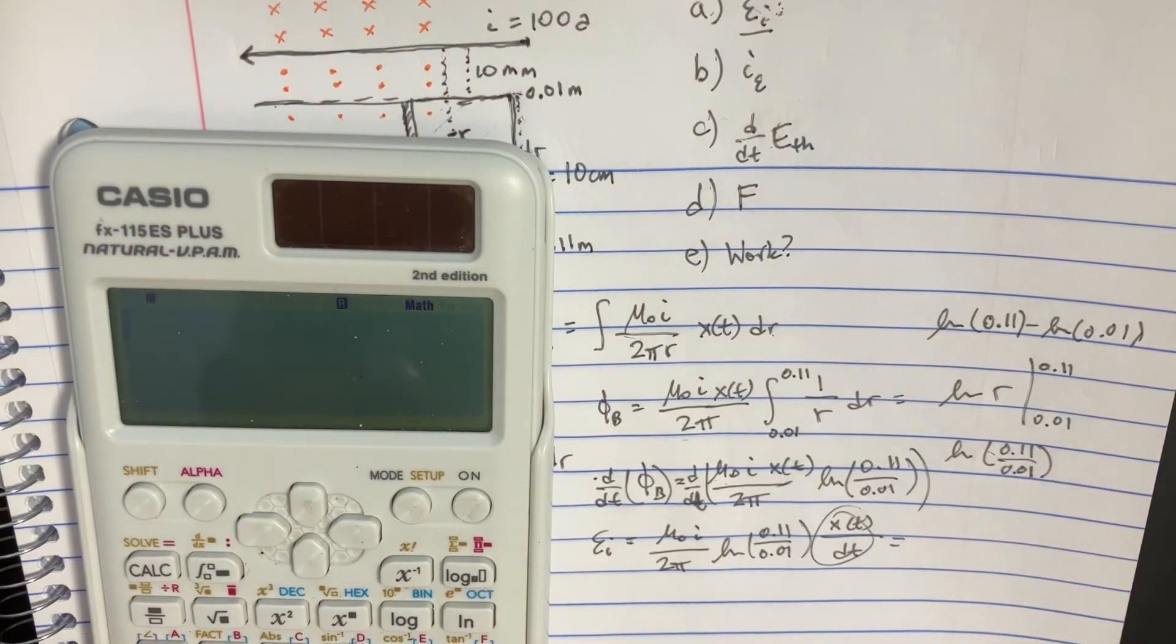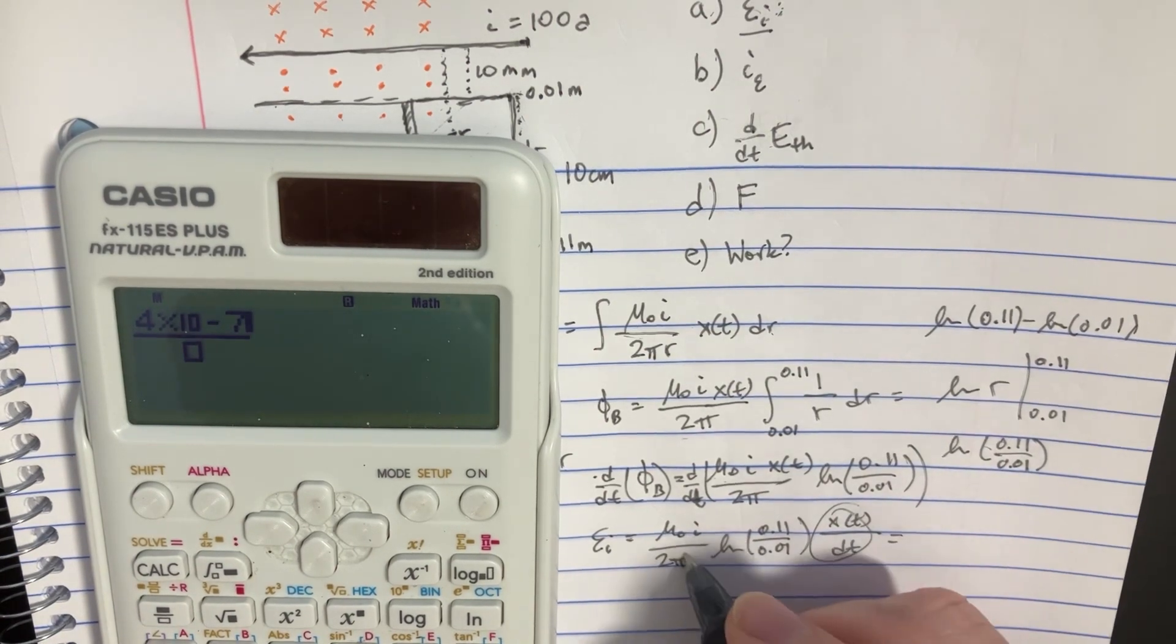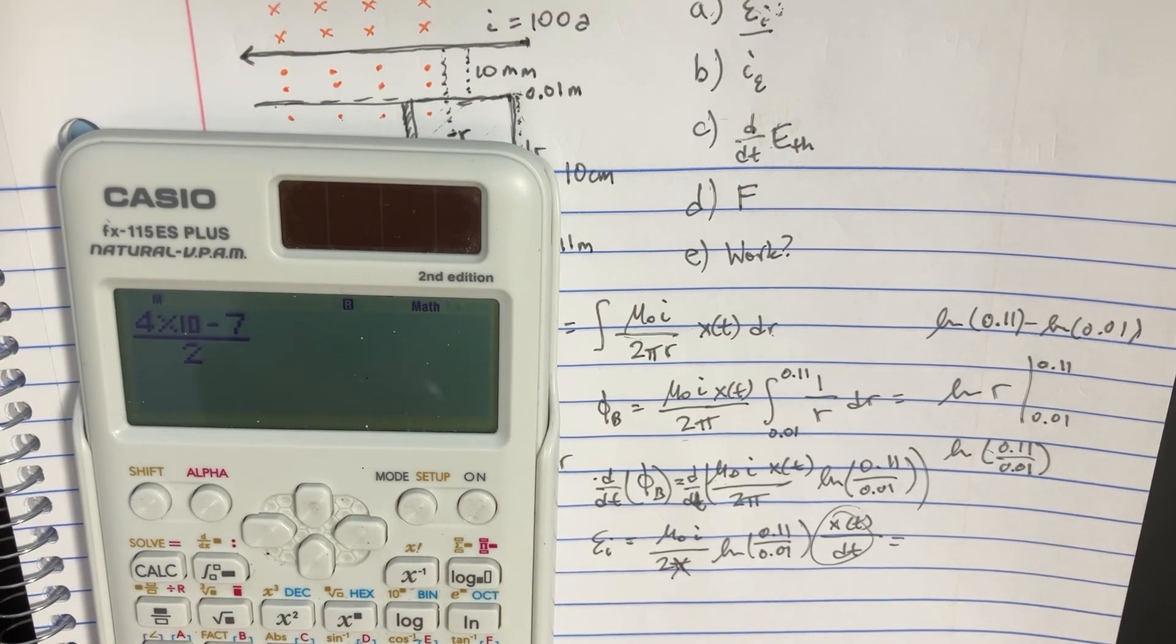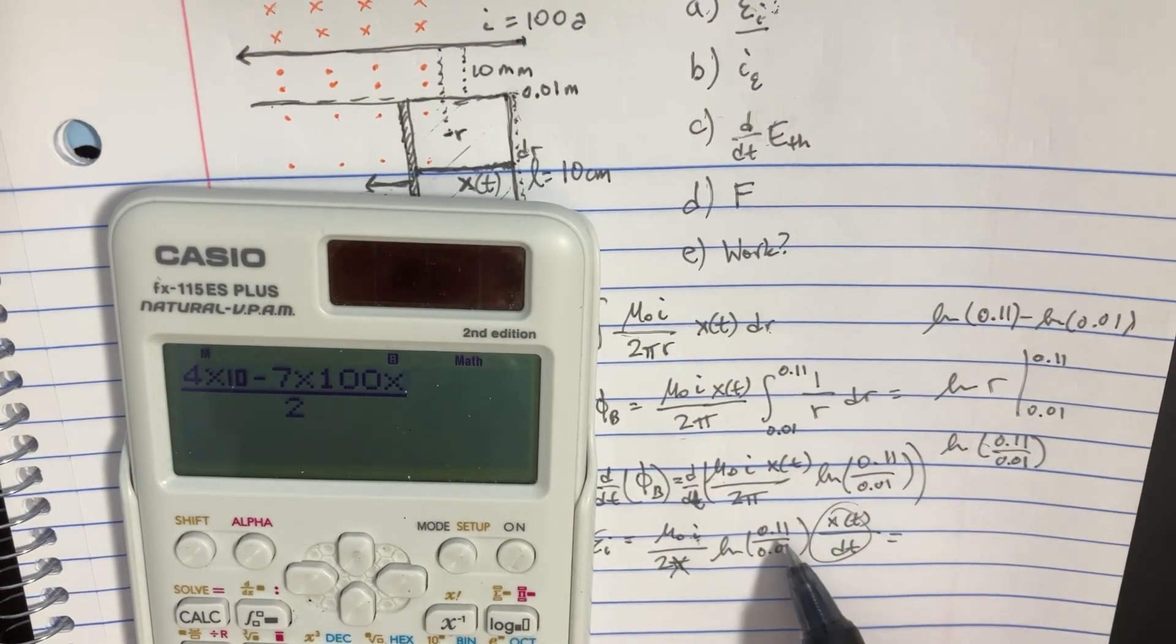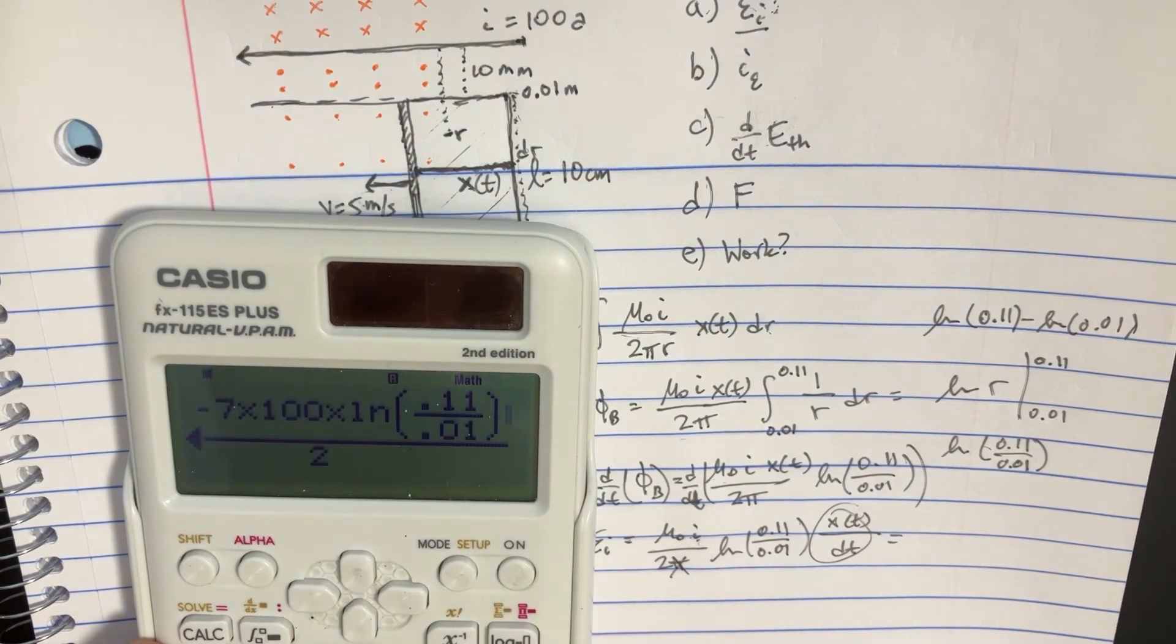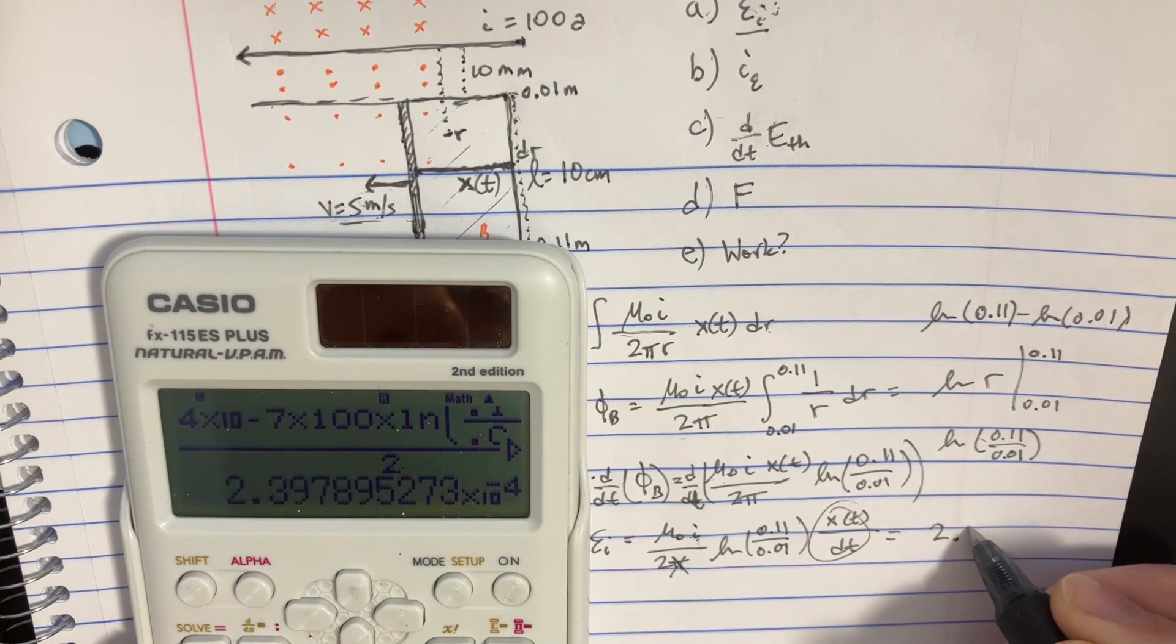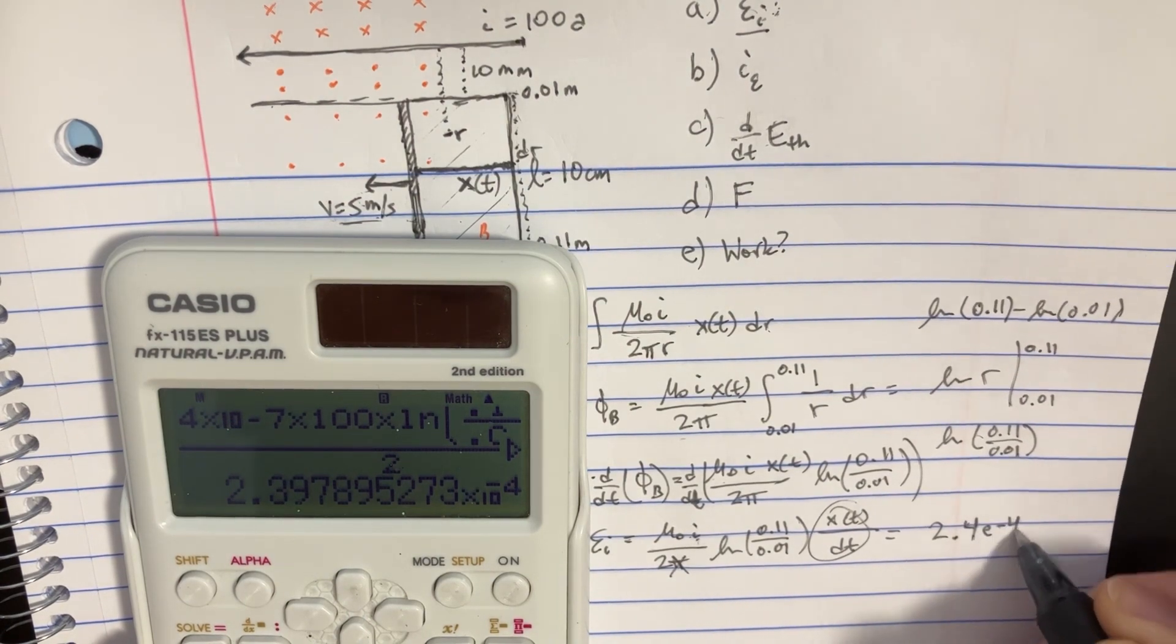So let's just go ahead and plug in mu naught is going to be 4e to the negative 7. We've got a pi on the bottom there. We'll just get rid of that. So we essentially just have the 2 on the bottom. And then we'll have the i. The i is going to be 100 amps. And then we'll go ahead and put that times the ln of 0.11 divided by 0.01. And we also have the velocity in there, times 5.